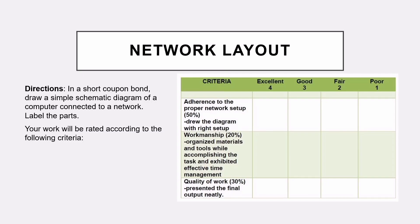For the activity, you need to use a schematic diagram of a computer connected to a network — label the parts. Your work is rated according to: adherence to proper network setup (50%), workmanship including organized materials and effective time management (20%), and quality of work. For the diagram, draw on shortbond paper — for example, draw a computer connected to a router, and the router connected to a modem. Please search the internet for sample network layout pictures for reference.